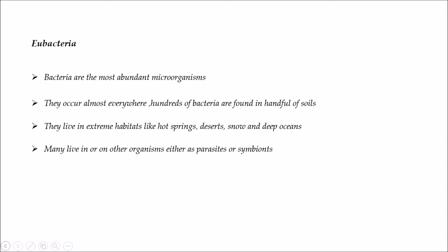Eubacteria are the most abundant microorganisms and occur almost everywhere. If you take a handful of soil you can find hundreds of bacteria. They live in extreme habitats like hot springs, deserts, snow, and deep oceans. Many live in or on other organisms either as parasites or symbionts.